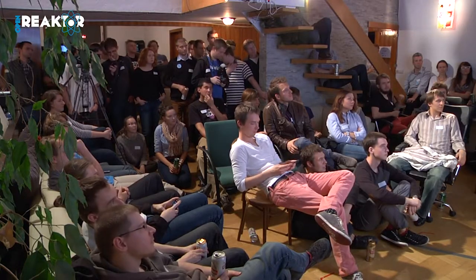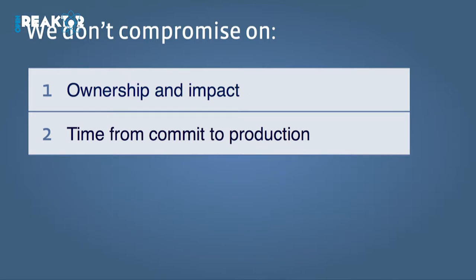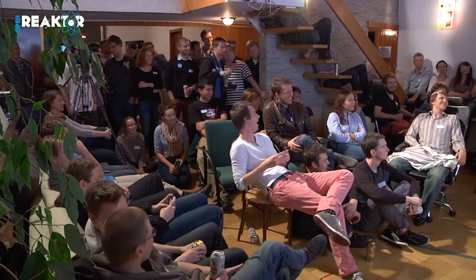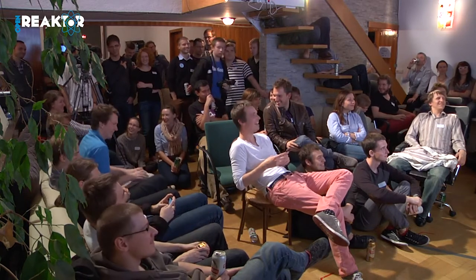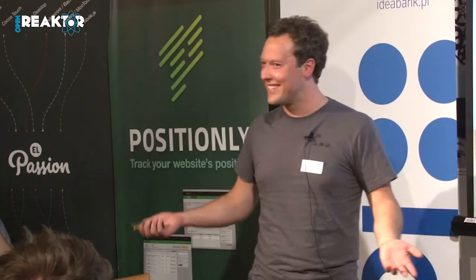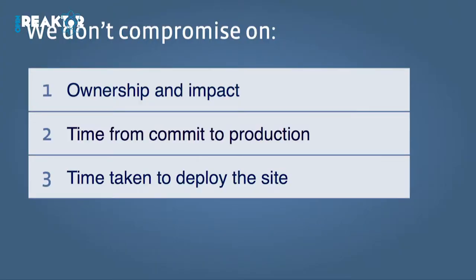The second is time from commit to production. It can be as short as half an hour if I need it to be. But the maximum time between commit and production is nine days — I cannot make it any longer than that. The third thing is time taken to deploy the site. When something goes wrong, you need to be able to fix it really quickly — that is extremely important to us.